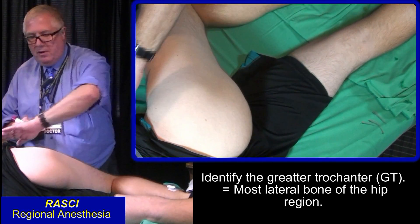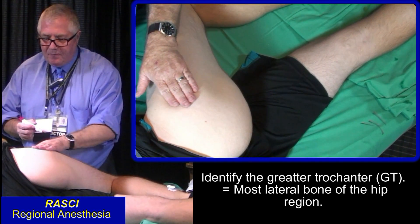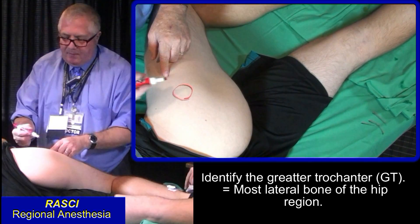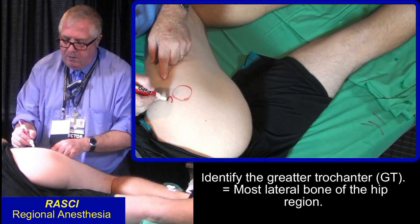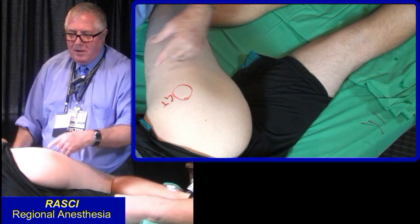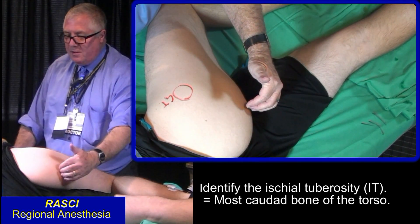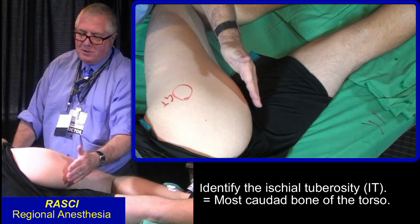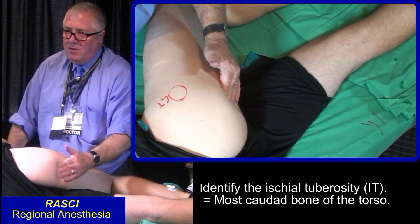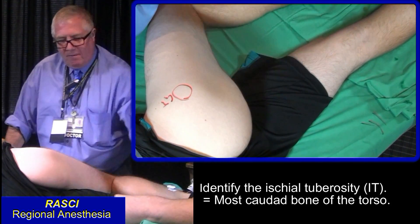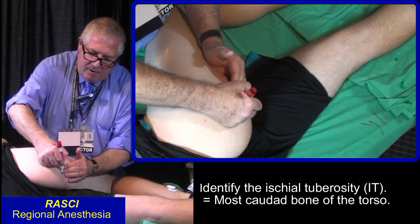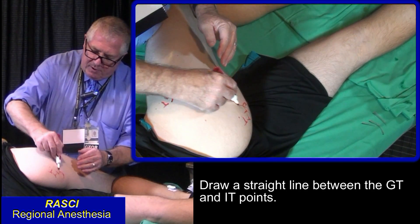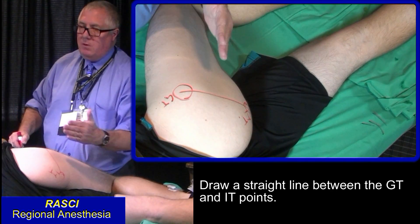The most lateral bone you can find in the body is the greater trochanter. It's like a big round bulge — call it GT. The other landmark is IT, the ischial tuberosity. If you sit on a hard wooden bench, it's the lowest bone of the torso — the part that carries your weight. Feel it from below. Join these two and that will give you the axis on which you work.